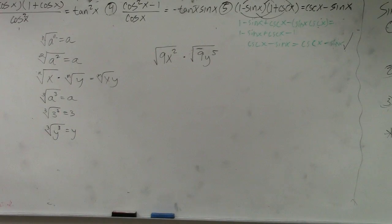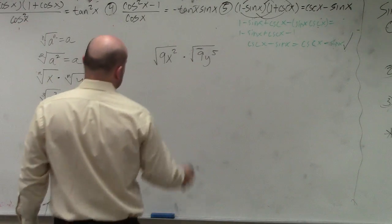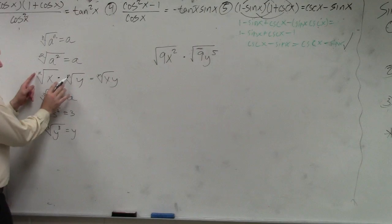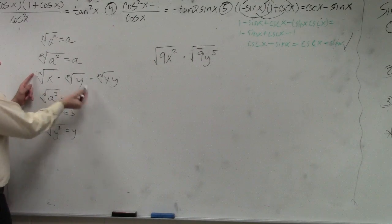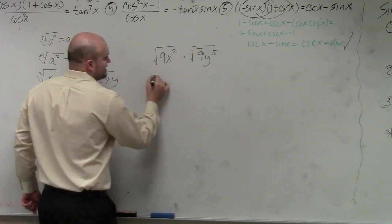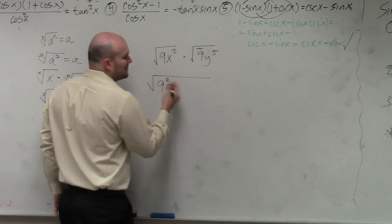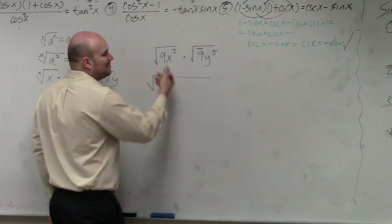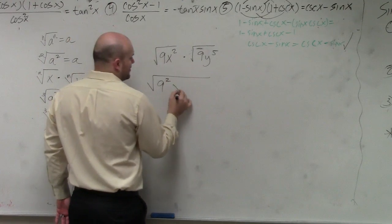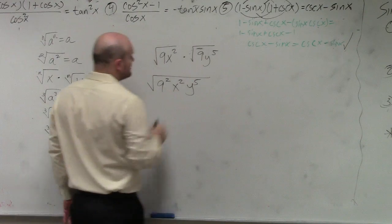We're both doing square roots, so therefore I can just simply multiply. They both have the same index, so I'm just going to multiply the variables. So I have 9 times 9, which is 9 squared — it is 81, but I'm just going to write it like this. I have x squared, and I have y to the fifth.